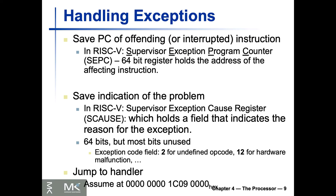Just like the throw-and-catch paradigm, we have two more registers we can define and add to our pipeline: SEPC (Supervisor Exception Program Counter) — a 64-bit register that holds the address of the instruction causing the exception — and SCAUSE (Supervisor Exception Cause Register), which holds a field indicating the reason for the exception. This can be used to later print or give hints to the user about what happened and why.